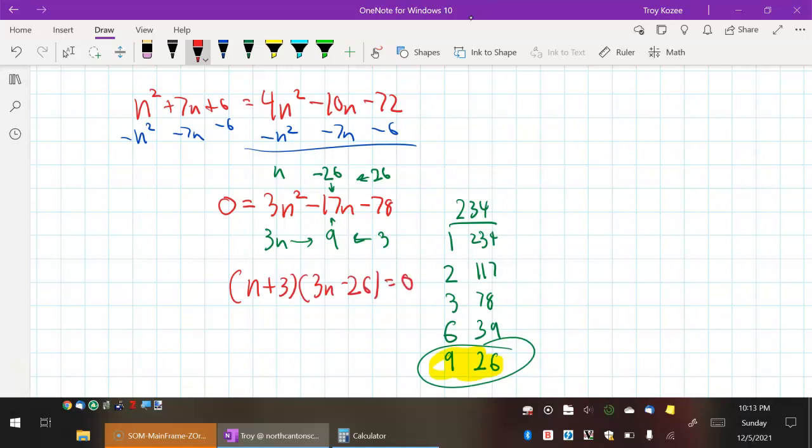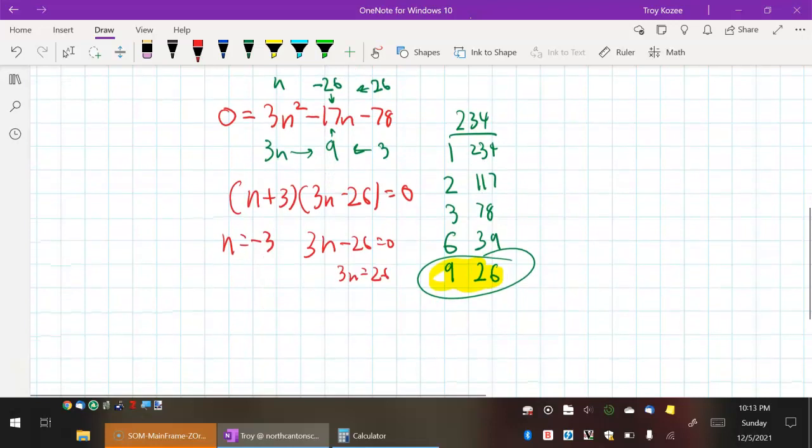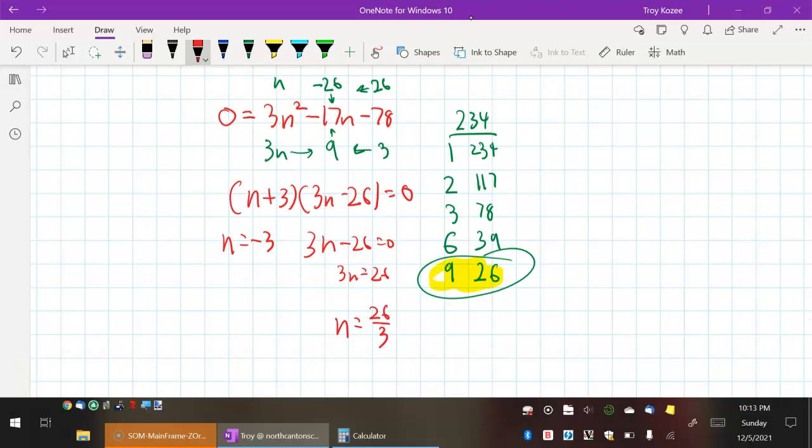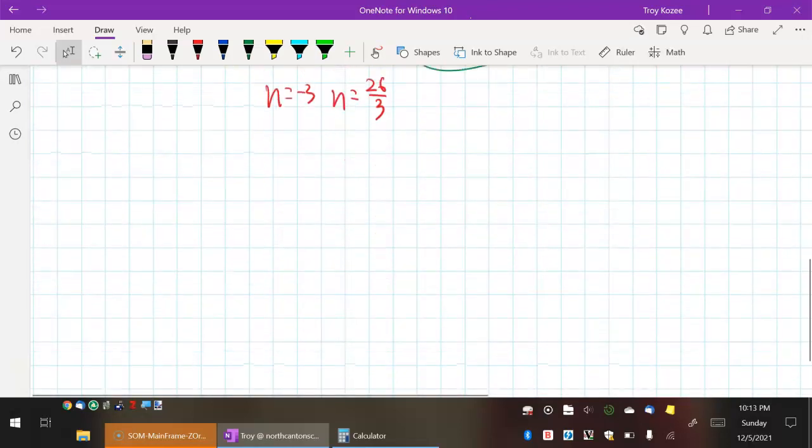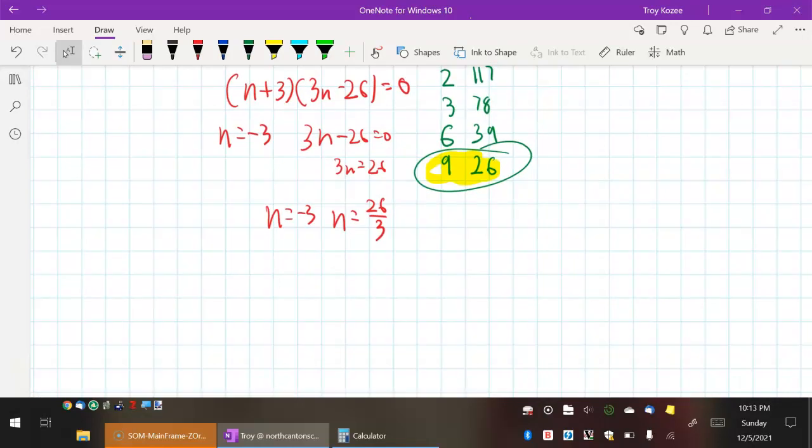That equals 0. So n is negative 3 or n, let's solve this really quickly, 3n minus 26 equals 0. Add 26 to each side, divide each side by 3, n is 26 over 3. That's a weird fraction. So we have two answers, negative 3 and 26 over 3, and neither one of them are 0 or negative 1, so we are good. Now those are my answers.